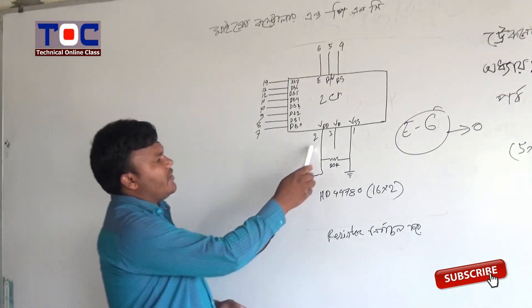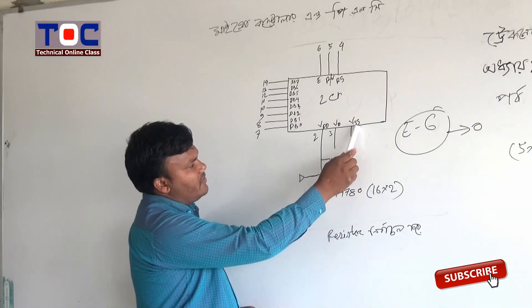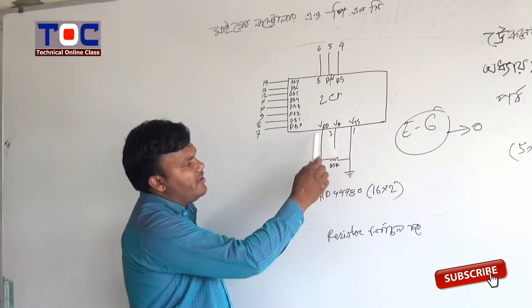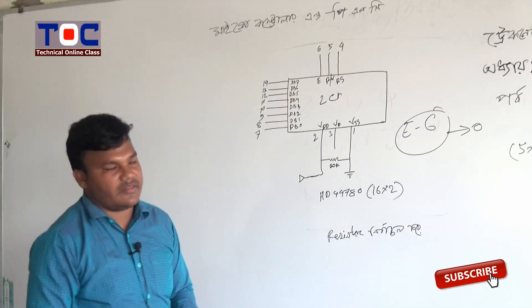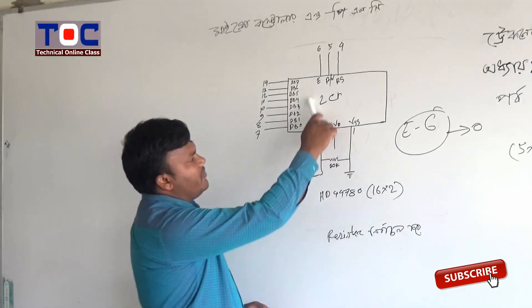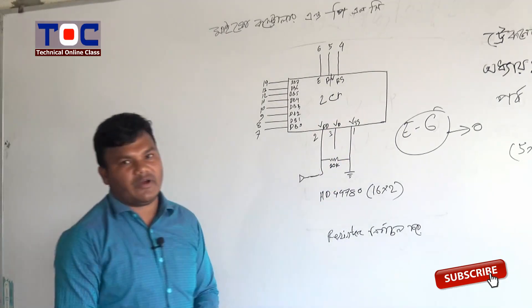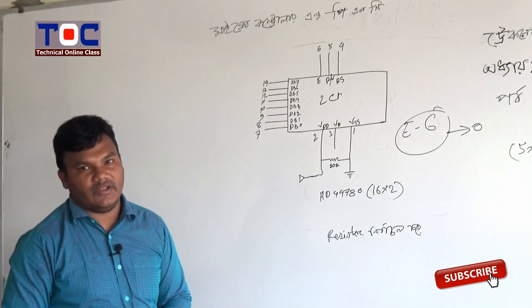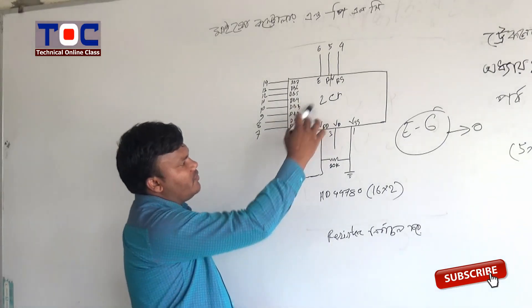If we have VCC, VSS, VDD — VDD and VSS — what are the functions of the LCD? What are the functions of the entire system? We can select the LCD — for example, the LCD is the first set.